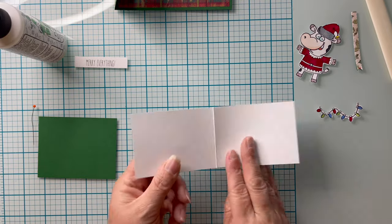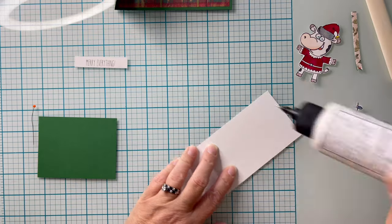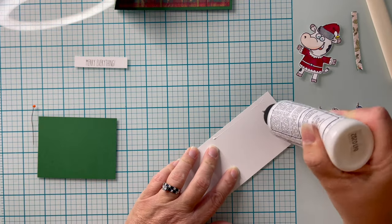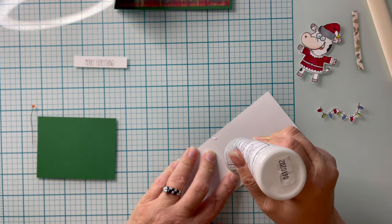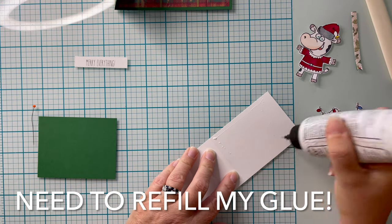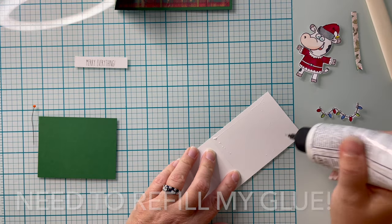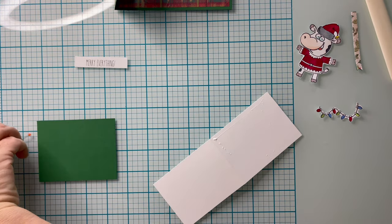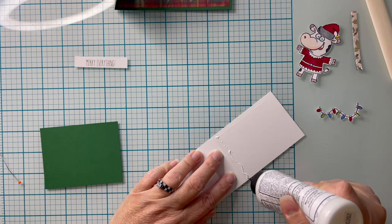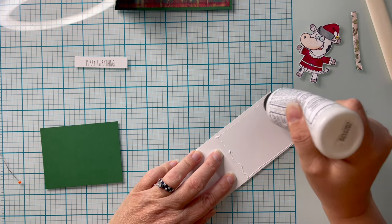If you are going to color with alcohol markers right directly onto this cardstock, you just want to make sure it is a super heavy cardstock, one that won't necessarily bleed. Now the back side of this, I'm going to go ahead and add my glue to and adhere it to my card panel.